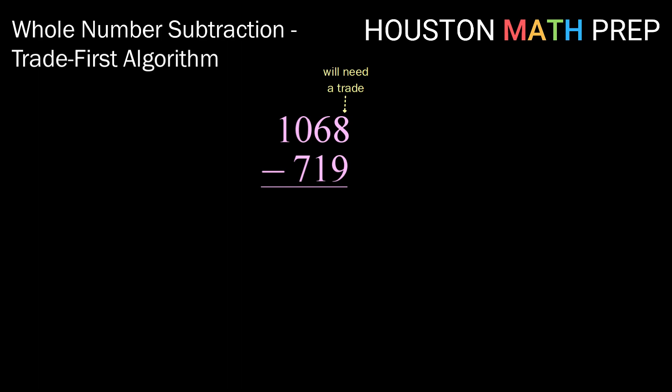So starting on the left, let's go ahead and get those trades going. So we'll take one away and add it to the next column. Now we have 10 over 7. In the next column, we don't need a trade, so we don't have to take anything from that 10. But we do need to trade for the 8 minus 9. So we're going to take one away from our 6 and add it over.